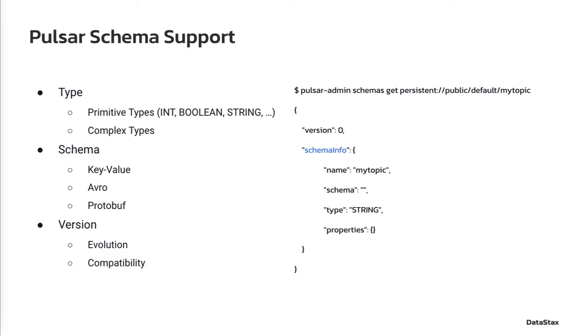The example on the right side shows a very simple message schema that uses string as the message payload type. The more complex types include Apache Avro, protobuf, and key value.